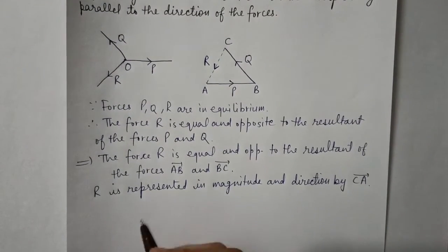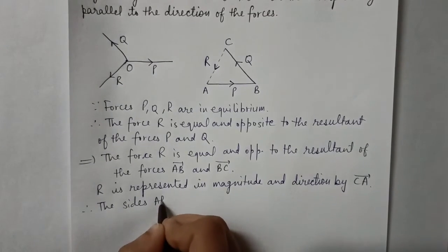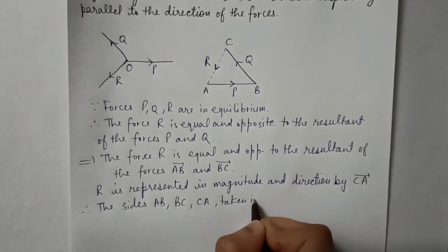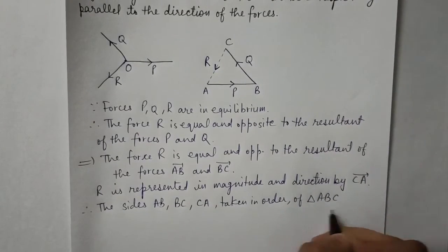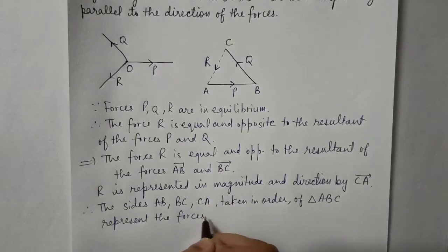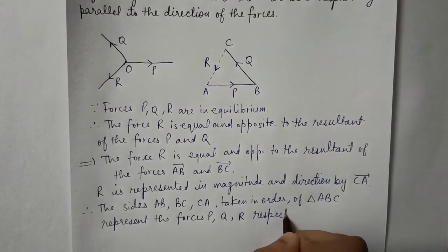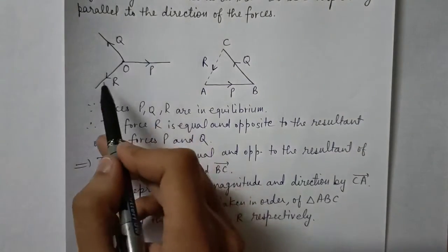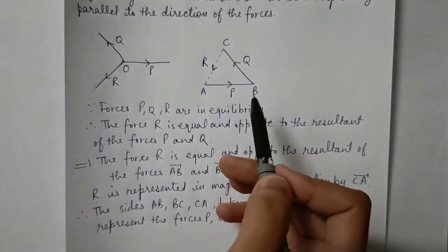We can now say that the sides AB, BC, and CA taken in order of triangle ABC represent the forces P, Q, and R respectively. So we know that the three forces P, Q, and R, which were in equilibrium, can be represented by the sides of triangle ABC.